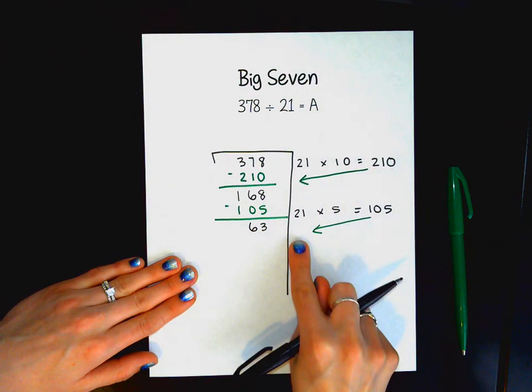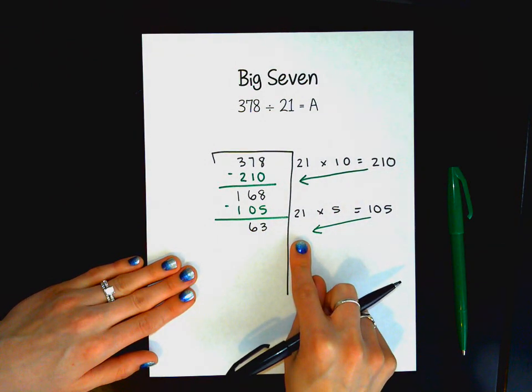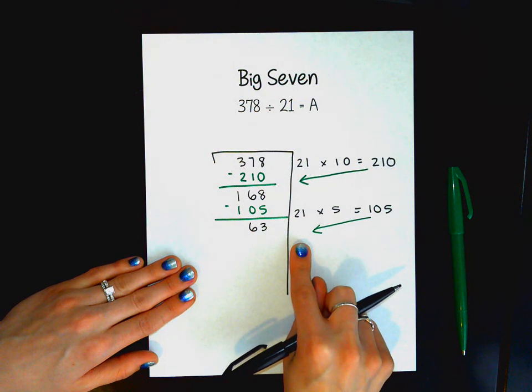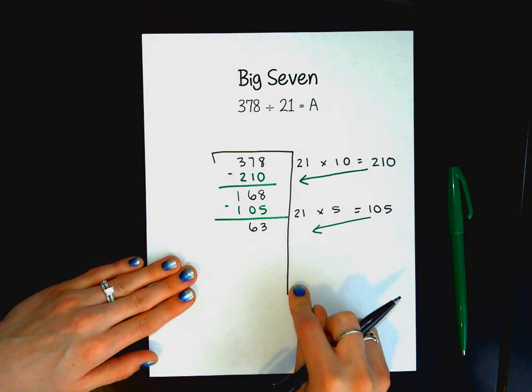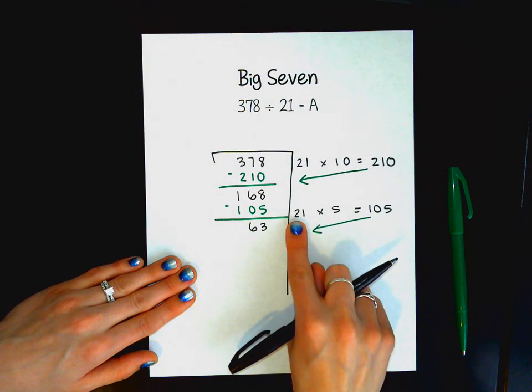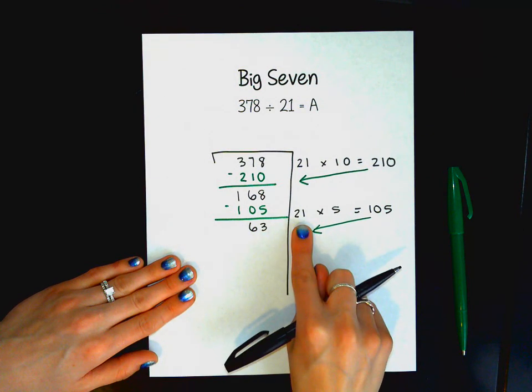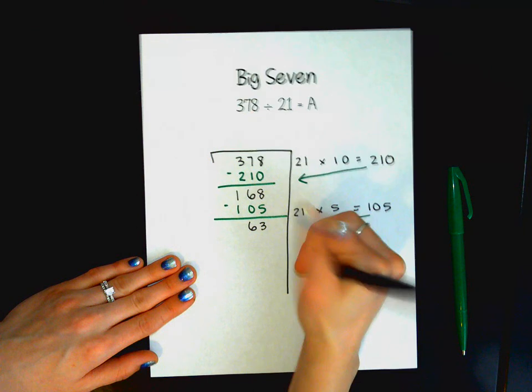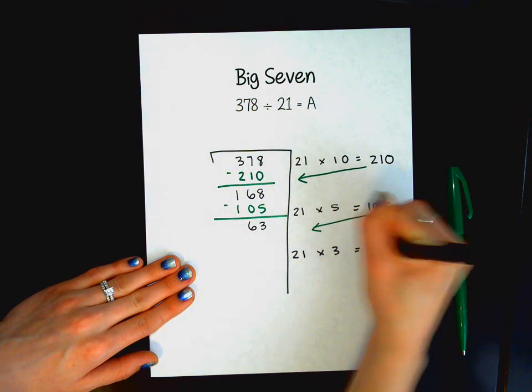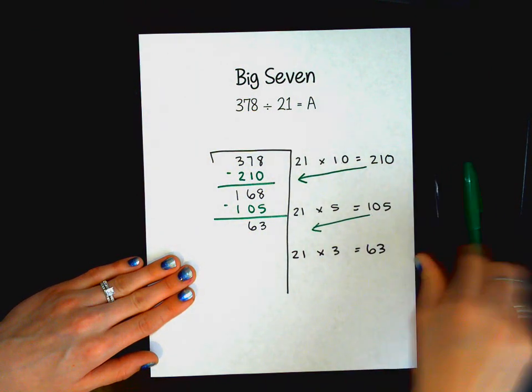So I have some students that still might not see a pattern and they might start with 21 times 1 and just chunk away at that. And that's a really great way to do it. I happen to know that if I break this number on place value, it would be 20 plus 1. 20 times 3 would get me 60 and 1 times 3 would get me 3. So I know that 21 times 3 is going to get me the 63 that I have remaining.